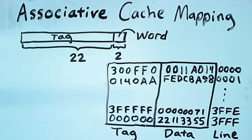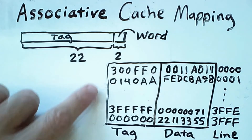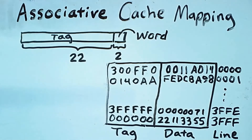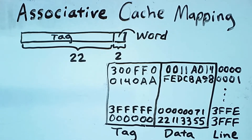And keep in mind that this particular type of Content Addressable Memory is also more expensive. So not only do we need more of it, but it costs more per bit.